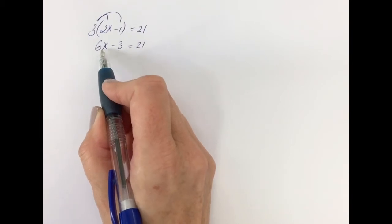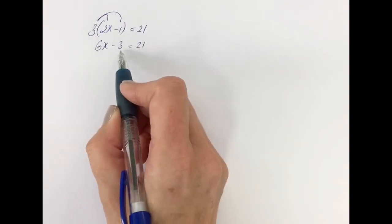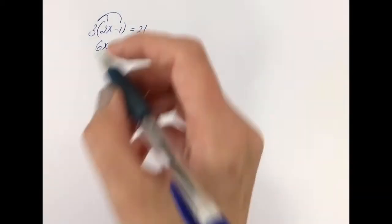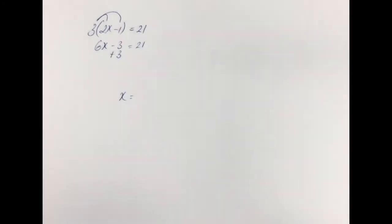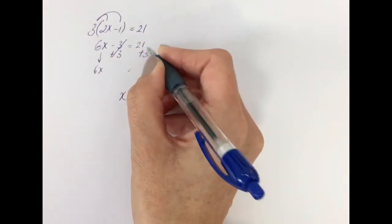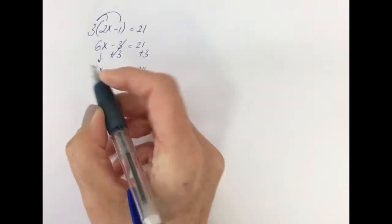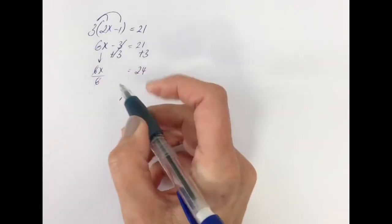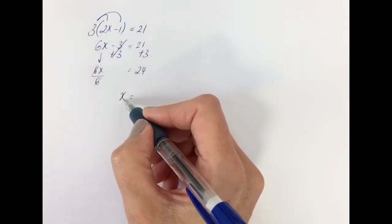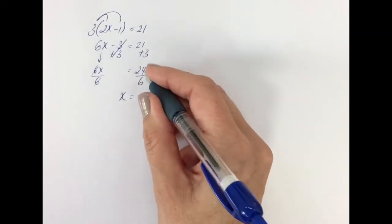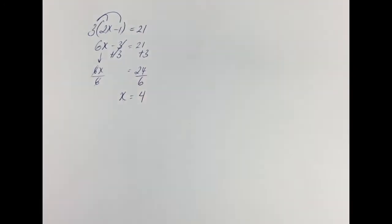We leave the 6 to the end because it's attached and therefore multiplied. So we'll get rid of the minus 3 first. To get rid of minus 3, we'll add 3. If we add 3 to the left-hand side, we've got to add 3 to the right-hand side. That leaves us with 6x equals 21 and 3 is 24. Now to get rid of the 6, divide by 6. 6x divided by 6 is 1x. Divide by 6 on the right as well, so 24 divided by 6 is 4.